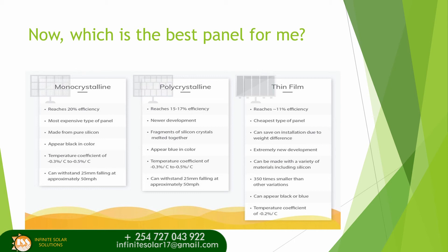The polycrystalline solar panel has an efficiency of about 15 to 17 percent. It is a newer panel in the market, made from fragments of silicon crystals that have been melted together. It appears blue in color with a temperature coefficient of negative 0.3 to negative 0.5 percent. It can withstand hail just like monocrystalline solar panels — 25 millimeters falling at approximately 50 miles per hour.